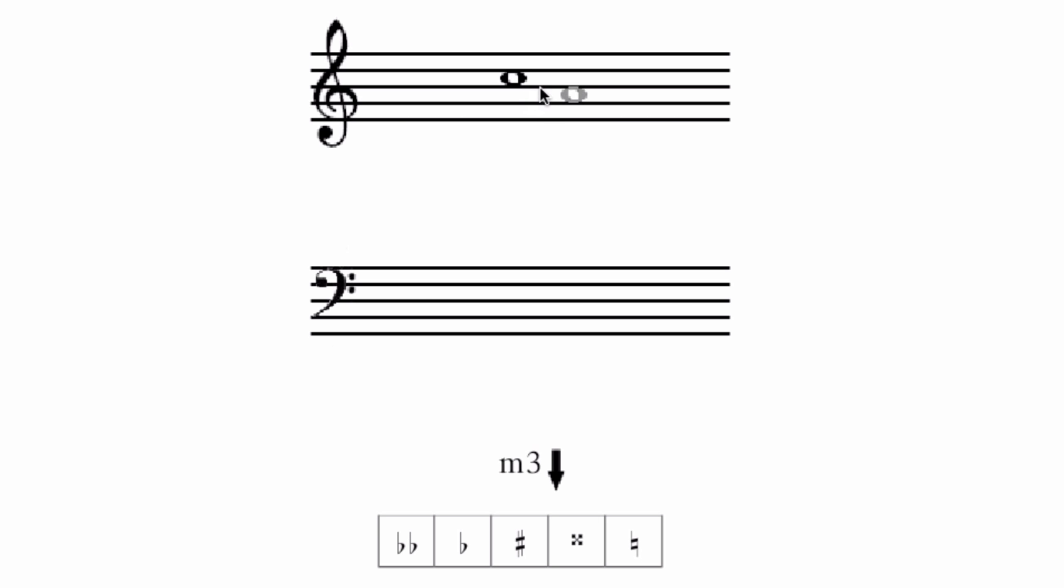Down a minor 3rd. Well, I know that all the 3rds will have white keys when they have the same accidental. I know they're minor 3rds if they're based upon the lowest node of B, E, A, or D. This is A, so that must be a minor 3rd.